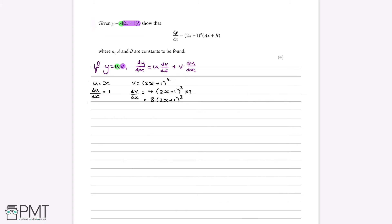Now we have everything we need to substitute u, v and the differentials of those two into this formula. So, u multiplied by dv by dx is x multiplied by 8 multiplied by 2x plus 1 to the power of 3. And then v multiplied by du by dx is 2x plus 1 to the power of 4 multiplied by 1.